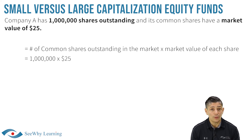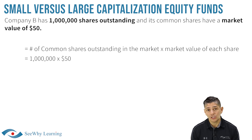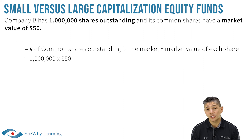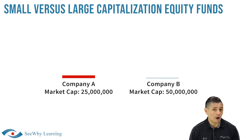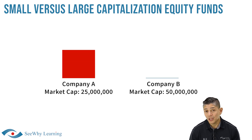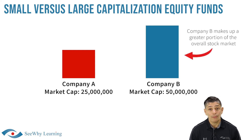Company A's market capitalization would be $25 million. In comparison, Company B has 1 million shares outstanding and its common shares trade in the marketplace at $50, so its market capitalization would be $50 million. If Company A has a market cap of $25 million and Company B has a market cap of $50 million, then in layman's terms, Company B makes up a greater portion of the overall stock market.